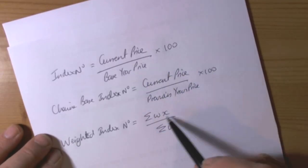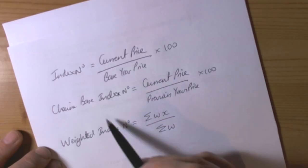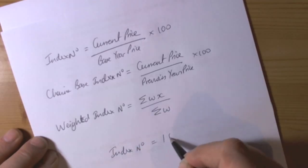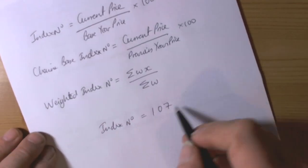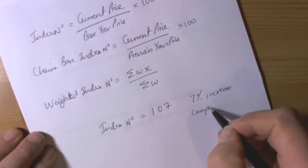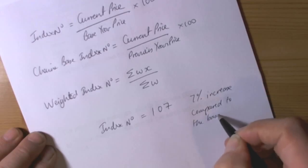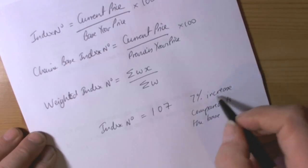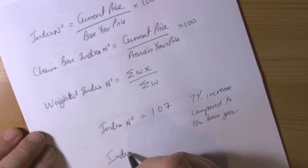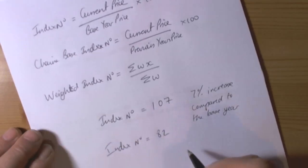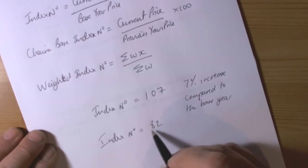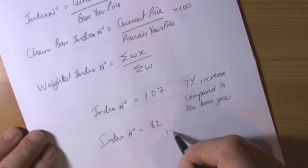I'll go through an example of each formula so you can see how they work. The basic idea of an index number is that it is a number. For example, an index number of 107 is telling you there's a 7% increase compared to the base year. The base year could be 10, 20, or 5 years ago, or last year. If the index number was 82, it's less than 100, showing a decrease — in this case an 18% decrease.